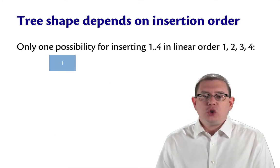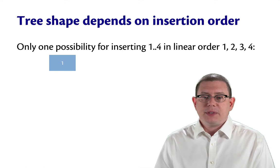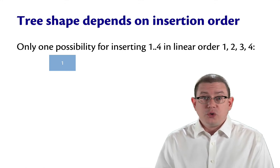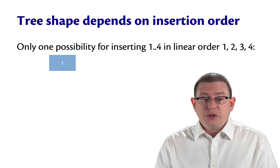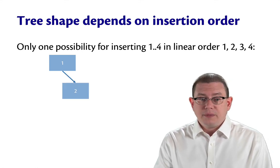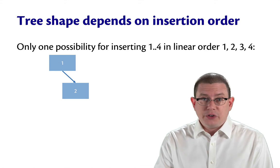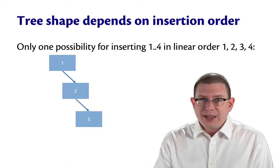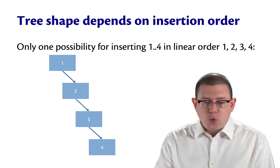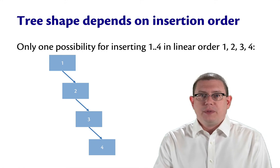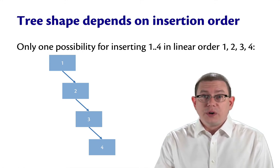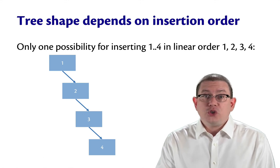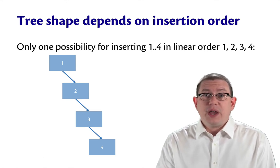Well, suppose, though, that you were going to insert the same elements, but in a linear order 1, 2, 3, 4. There's only one way to do that insertion. You'd start off with 1, then by the BST invariant, 2 has to go to the right of that, 3 has to go to the right of 2, and 4 has to go to the right of 3. So when you insert elements in this increasing order, you end up with a tree that has just degenerated to a list.